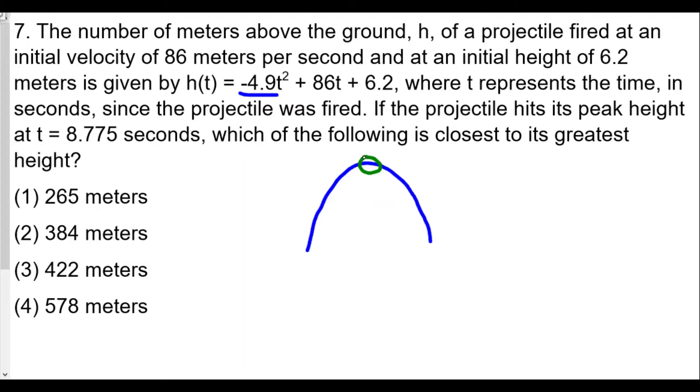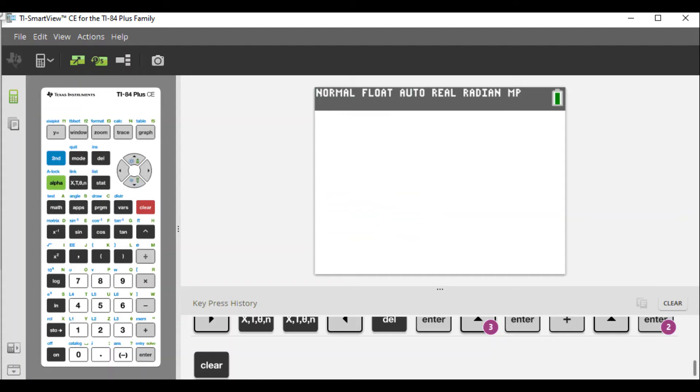You guys will need calculators here. I'm just going to write some stuff down instead of flipping back and forth, which is kind of annoying. 8.775 seconds. Here we go, calculator. We're going to type in, and remember it was negative 4.9.